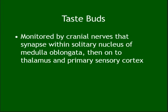Taste sensation does go to the thalamus. The cranial nerve will carry it to the solitary nucleus of the medulla oblongata, then to the thalamus, and then to the primary sensory cortex, which is the final destination. So taste does synapse in the thalamus.